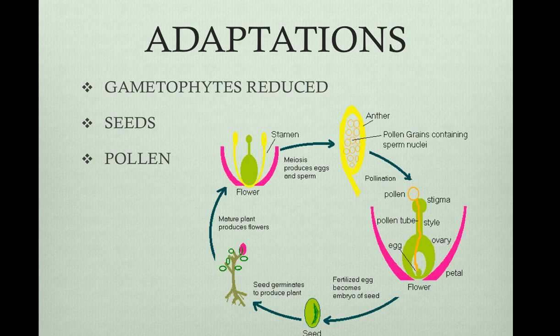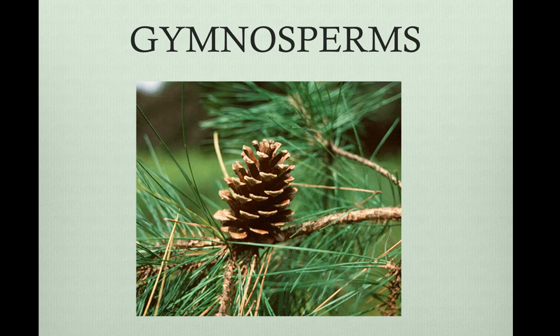The first group of seeded plants are gymnosperms, and there are about 720 species. They are considered naked seed plants because they lack ovaries. The most familiar types of gymnosperms are cone bearers. The ovules and seeds develop on the surface of specialized leaves called sporophylls. They evolved before angiosperms.